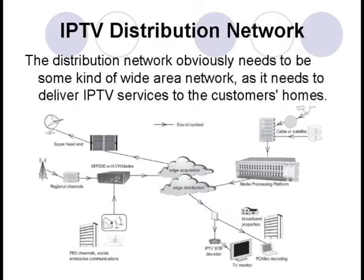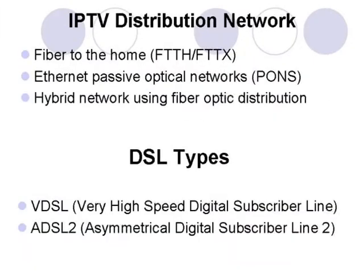The third step of delivering IPTV is the distribution network. Building an IP distribution network involves mixing and matching many current technologies. The most prevalent types of networks for IPTV distribution are fiber to the home, Ethernet passive optical networks, or hybrid networks using fiber-optic distribution throughout a metro area coupled with a digital subscriber line. The typical DSL types used for IPTV are VDSL or ADSL2.